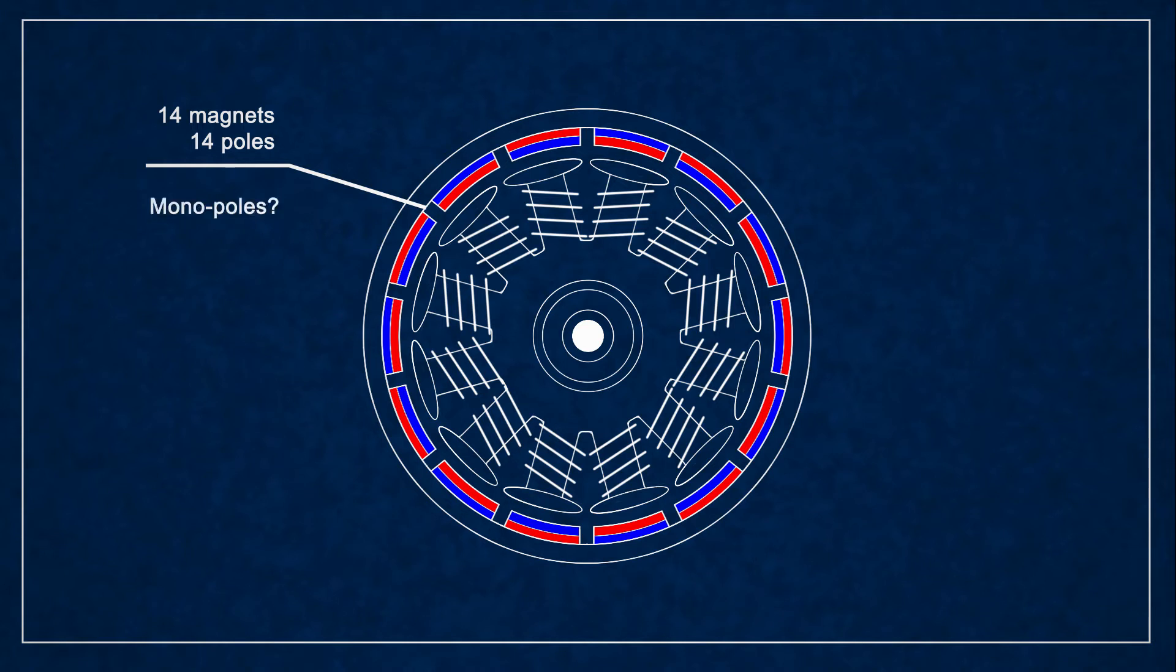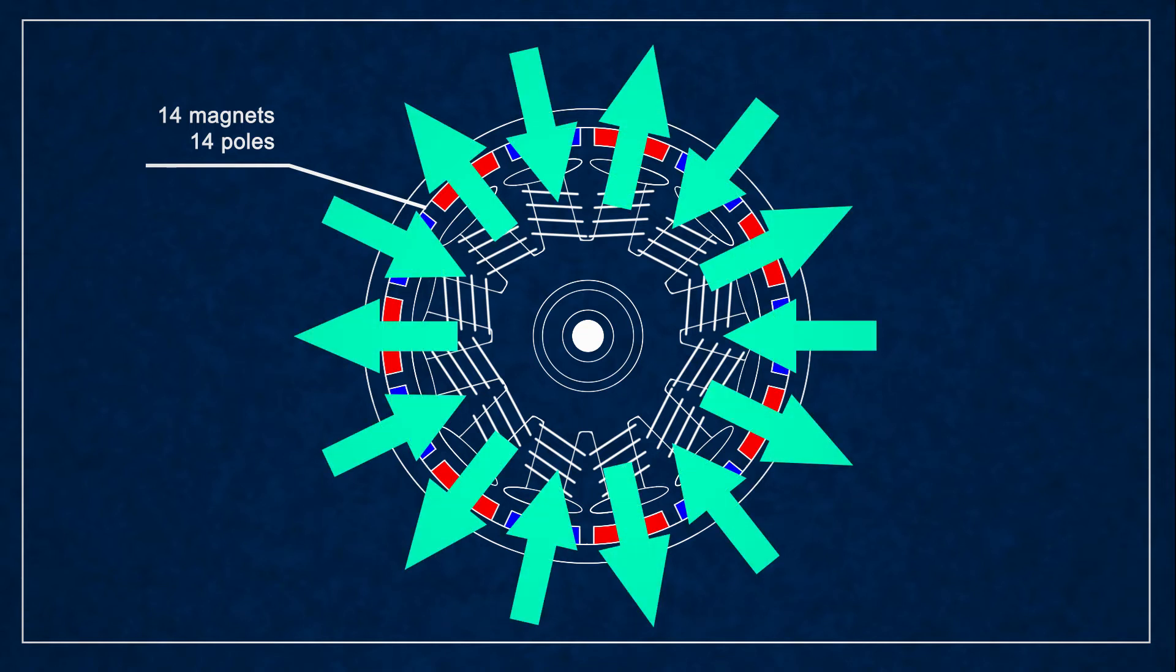Each magnet has two poles on its own but that doesn't make it a 28 pole motor because for motor construction only those poles count that point towards the air gap. More generally the pole count is about the number of times the magnetic field changes direction in the air gap.